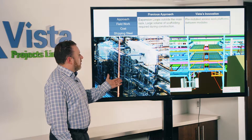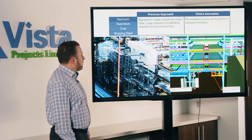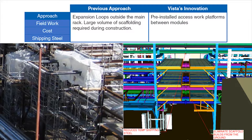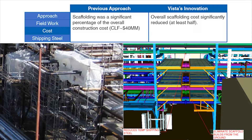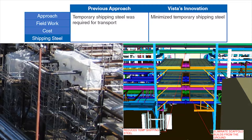Between our pipe rack modules, we have installed platforms to allow for bolt-up of our modules. In the past, we've had to scaffold to get up to all the bolted connections on the modules. Vista's innovation is to pre-install access work platforms on the modules. This allows us to reduce field work and improve the amount of time it takes to bolt these modules up at site, leading to a reduction in cost. It also helps minimize the amount of shipping steel required to support the lines while they're being transported.